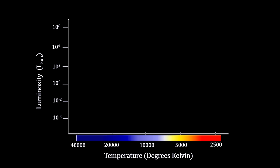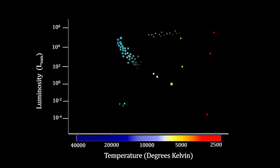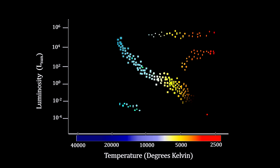If we begin with the stars we used to illustrate blackbody radiation — Aldebaran, Arcturus, Capella, our own Sun, Sirius A, and Spica — and throw in a few others like Sirius B, Wolf 359, Polaris, and Vega, we get a graph that looks like this. With this small sample, it looks like any combination of temperature and luminosity is possible. But Hertzsprung and Russell meticulously plotted all the stars with known distances and luminosities, and they got something very different.